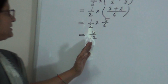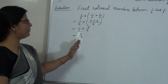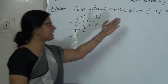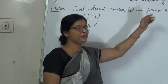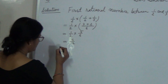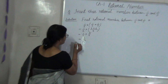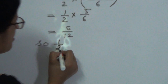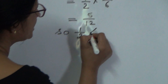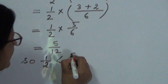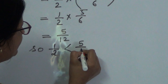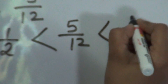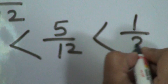This gives us 5/12. We can see that 5/12 lies exactly in between 1/2 and 1/3, so 1/2 is less than 5/12, which is less than 1/3.